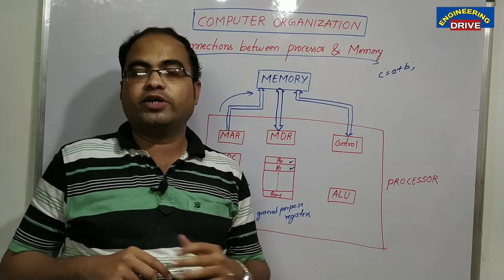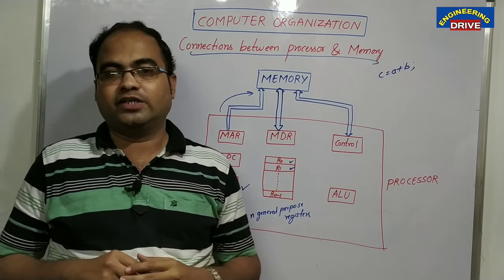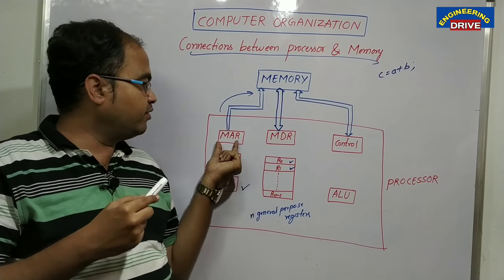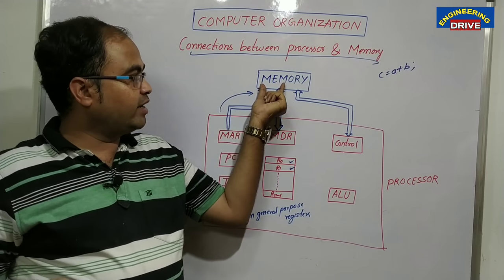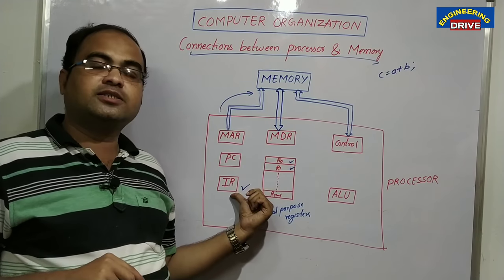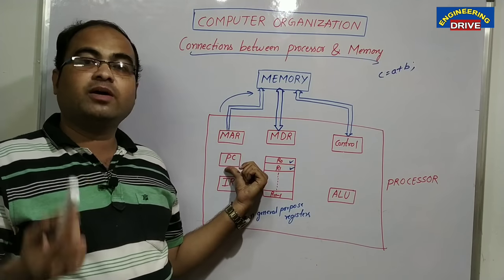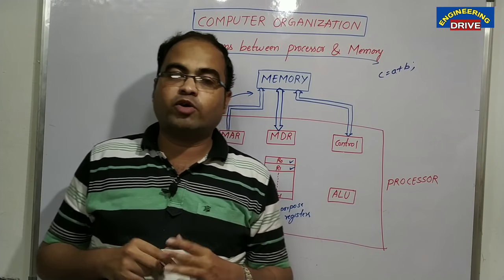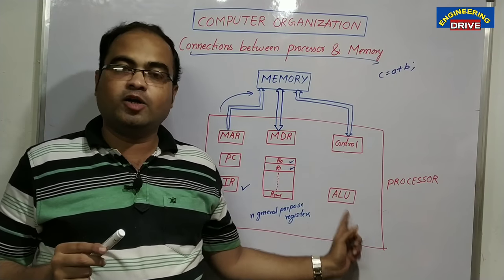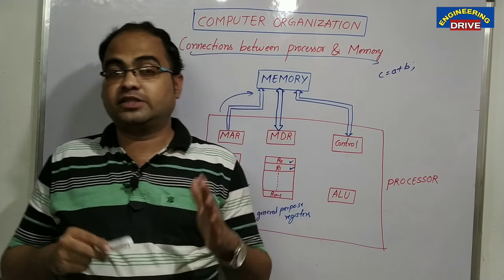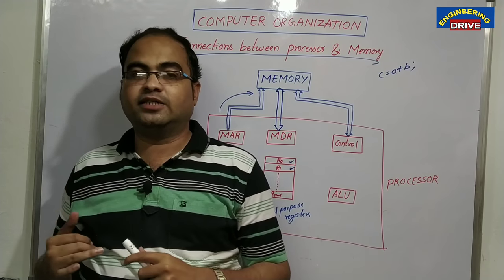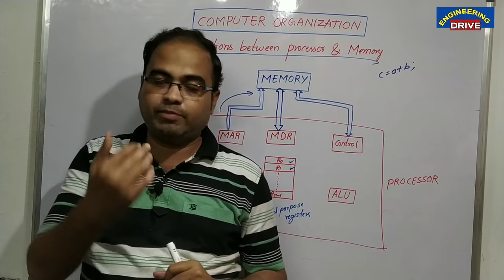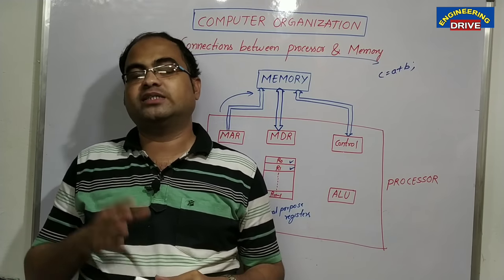Once values are stored in general purpose registers, the arithmetic and logic unit performs the calculation — in this case, addition. This entire work is monitored by the control unit. To summarize: the address of the required data is specified in MAR, the data is brought and stored in MDR, a copy goes into the instruction register, the PC increments after execution, values are stored in general purpose registers, ALU performs calculations, and the control unit monitors all activities. All of this happens behind the scenes inside our system, which is why knowledge of computer organization is essential for every student.